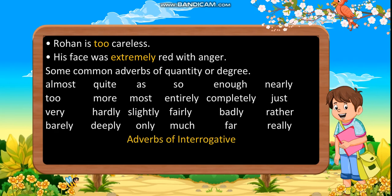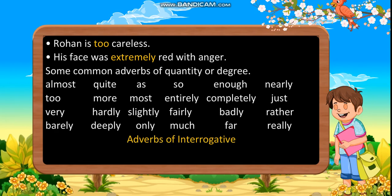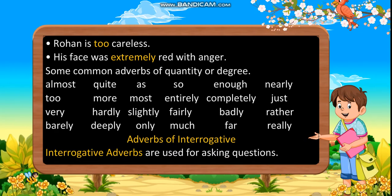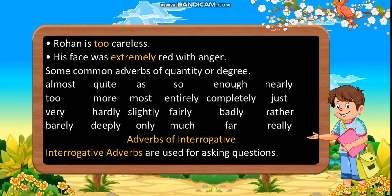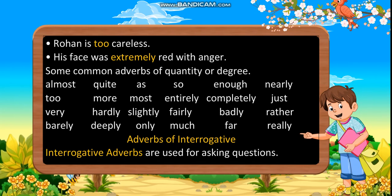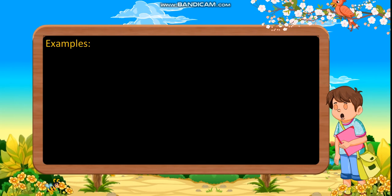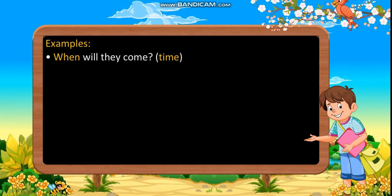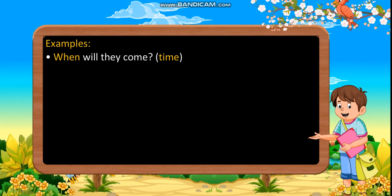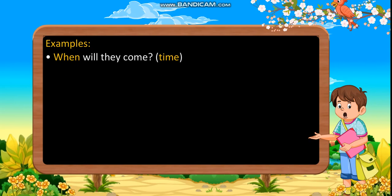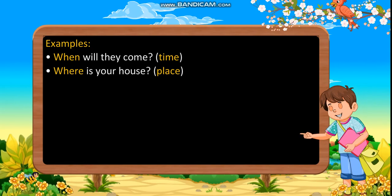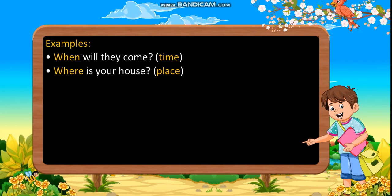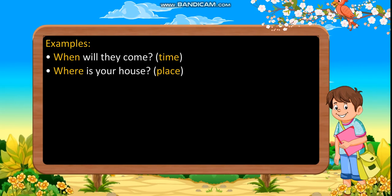Adverbs of interrogative. Interrogative adverbs are used for asking questions. Examples: When will they come? (time). Where is your house? (place).